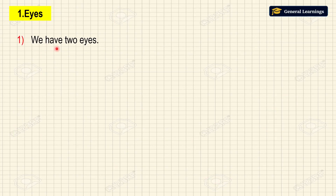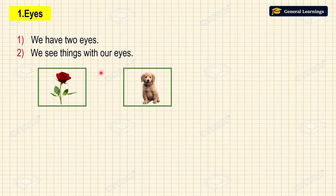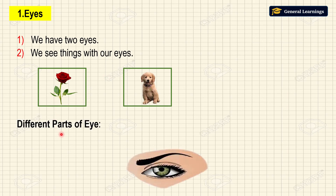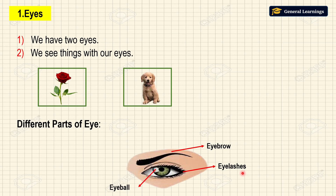First we will see about eyes. We have two eyes. We see things with our eyes. Now we will see what are the different parts present in our eye. This part is called the eyebrow, this part is called the eyelashes, this one is called the eyeball, and this is called the eyelid.